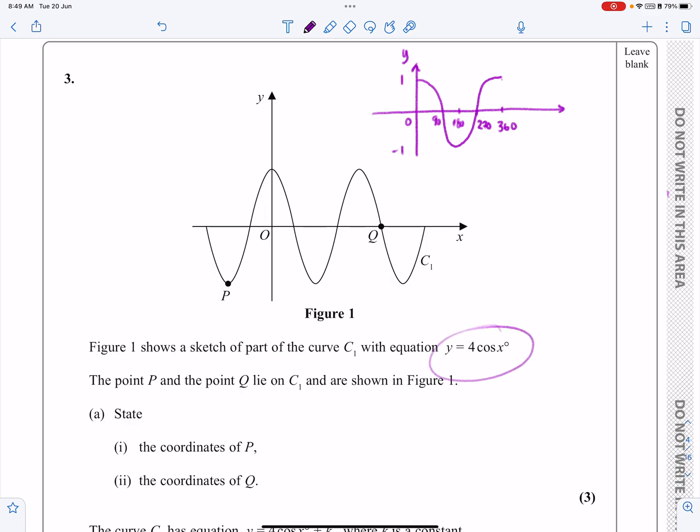In this case, what we're doing is 4 cos x. We are doing y equals a f(x). When we have this function, everything is being multiplied by a. This is going to be a stretch parallel to the y-axis by a scale factor of 4.